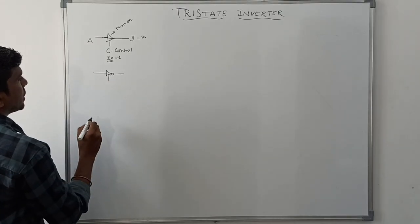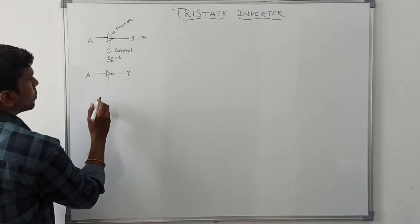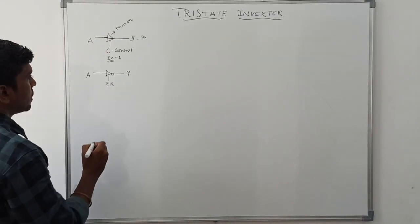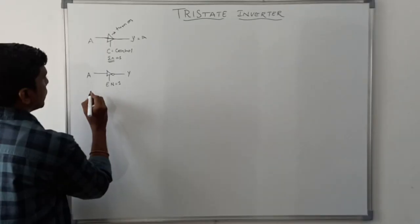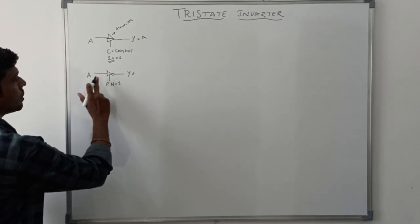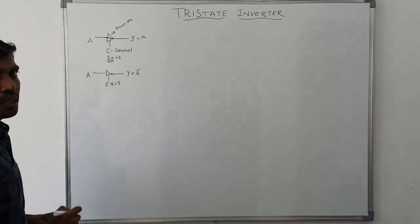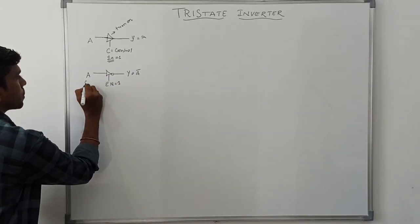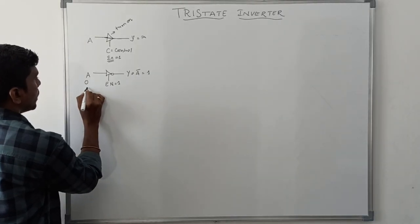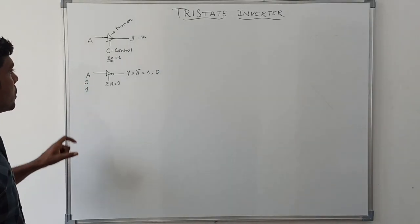This is the symbol of a tri-state inverter. A is the input and Y is the output. The controlling input is enable. Whenever enable equals one, the A value is transferred to the output as the complement: Y equals A̅. So when A equals zero, the output is one; when A equals one, the output is zero.